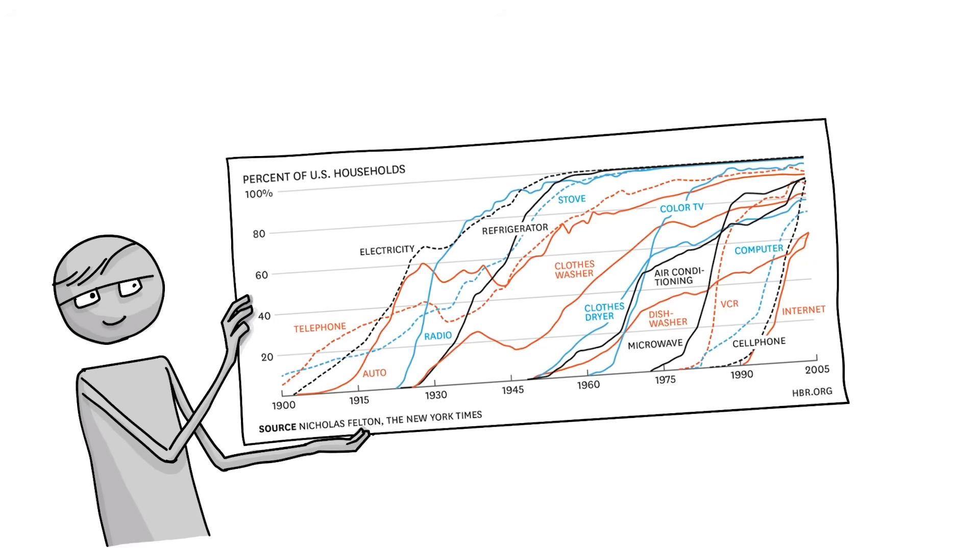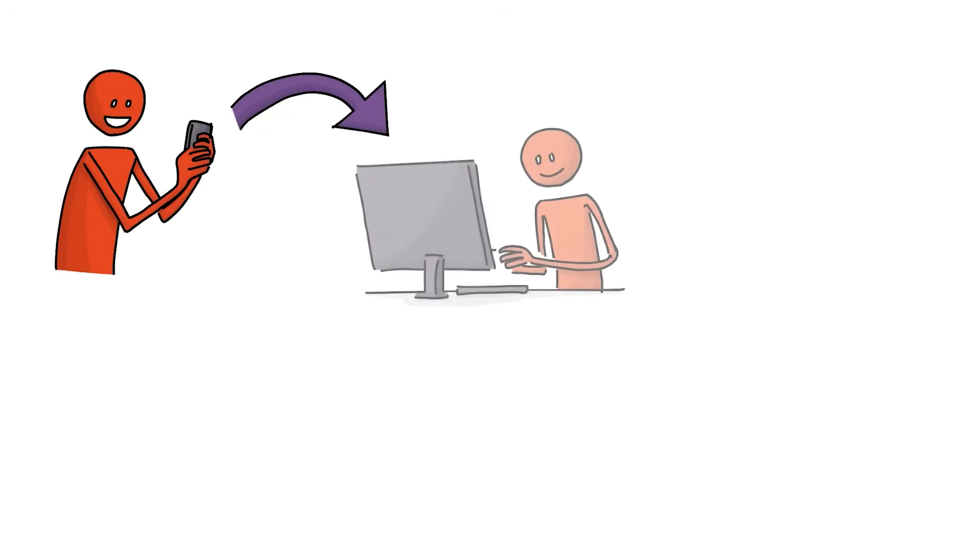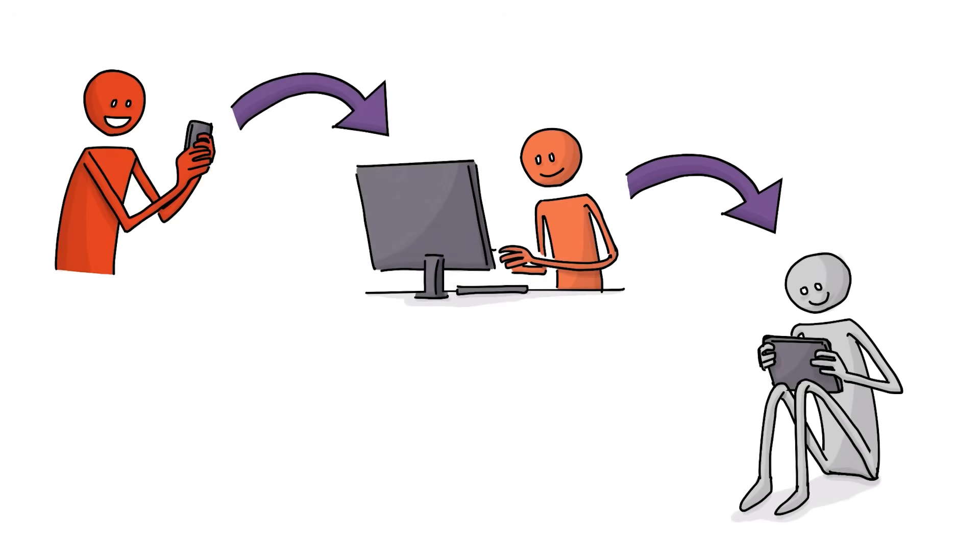Research by Nicholas Felton suggests that as communication speeds up, innovators and early adopters can share new things faster with everyone else.